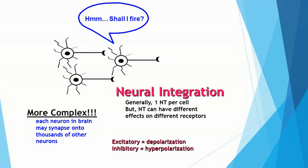Basically, our receiving neuron is receiving input from other neurons — more than one — and it has to add those up and decide whether or not it will send a signal along its length to other adjacent neurons.